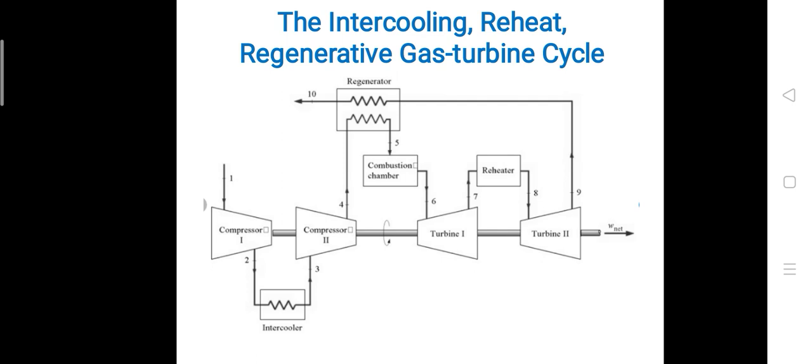Now we are going to see the gas turbine with intercooling, reheat, and regenerative arrangement. This is a schematic diagram for the intercooling, reheat, and regenerative arrangement of the gas turbine, used to increase the efficiency of the gas turbine.